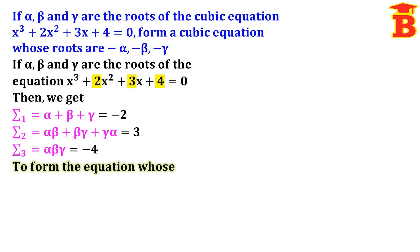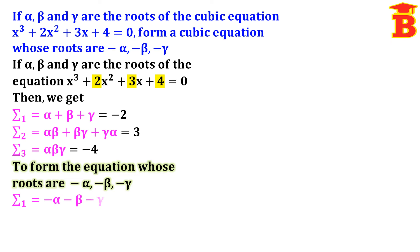Now we have to form the equation whose roots are minus alpha, minus beta, minus gamma. For these roots, new sigma 1 equals minus alpha plus minus beta plus minus gamma. Taking minus as a common factor gives minus times (alpha plus beta plus gamma). Substituting minus 2 for alpha plus beta plus gamma: minus times minus 2 equals plus 2.